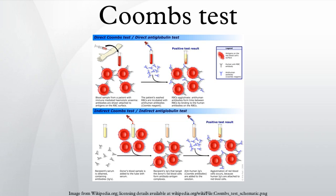The two Coombs tests are based on the fact that anti-human antibodies, which are produced by immunizing non-human species with human serum, will bind to human antibodies, commonly IgG or IgM. Animal anti-human antibodies will also bind to human antibodies that may be fixed onto antigens on the surface of red blood cells, and in the appropriate test tube conditions this can lead to agglutination of RBCs. The phenomenon of agglutination of RBCs is important here because the resulting clumping of RBCs can be visualized. When clumping is seen the test is positive, and when clumping is not seen the test is negative.